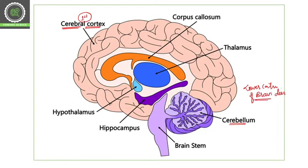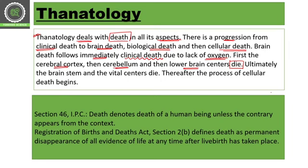This is the step-by-step death progression in the brain in the absence of oxygen. Ultimately, the brain stem dies and vital centers die as well. After that, the process of cellular death begins.